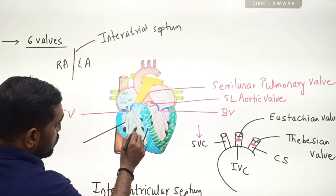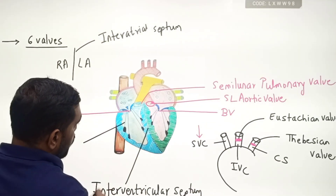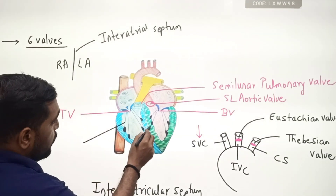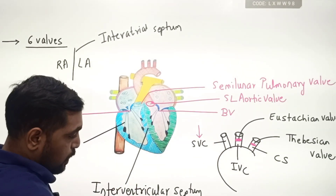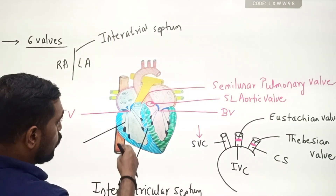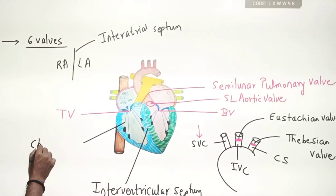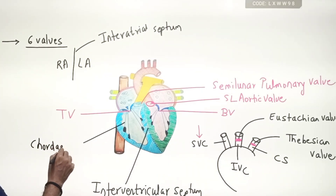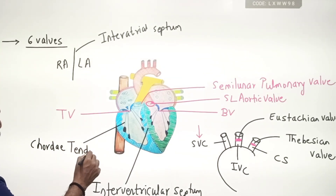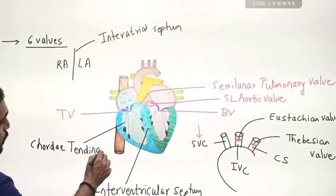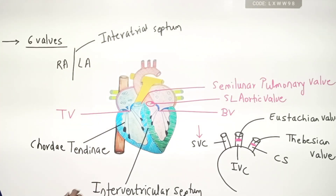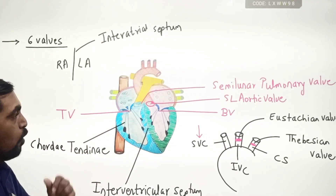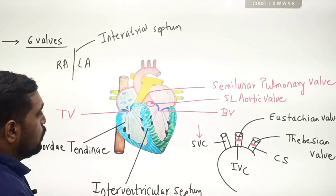There are fibers attached to the valves, and the valves are elastic in nature. These fibers help the valves to open and close. They are given the name chordae tendineae. These are attached to the valves of the bicuspid and tricuspid and to the wall of the ventricle.